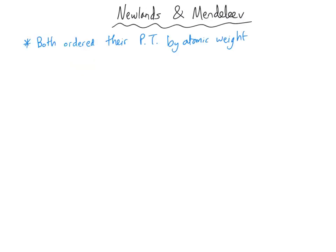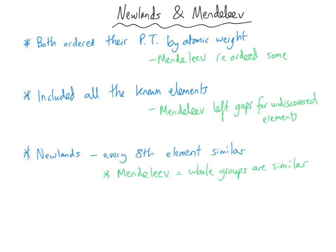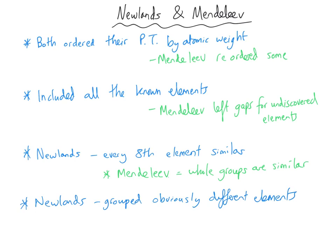To finish with a quick comparison of Newlands and Mendeleev: both ordered their periodic tables by increasing atomic weight, although Mendeleev reorganised some elements where they fitted better. Both included all known elements, although Mendeleev left gaps for undiscovered ones. Newlands declared that every eighth element had similar chemical properties, whereas Mendeleev grouped elements into whole groups with similar properties. Newlands was widely criticised for grouping very different elements together, while Mendeleev's gaps were viewed as a curiosity at first — but when his predictions were proven, his table was very quickly and widely accepted.